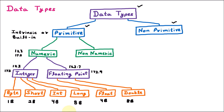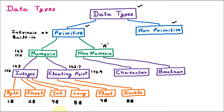Under primitive, the next type is non-numeric data. For example, storing a character like 'a' is non-numeric. Non-numeric data is further classified into character and boolean. Character is used for storing characters like 'a' or 'v', and it is two bytes in size. Boolean is used when we need true or false values, such as in an if condition. Boolean can store only two values — true or false — and is of one bit in size.